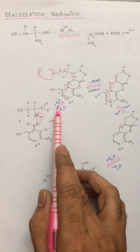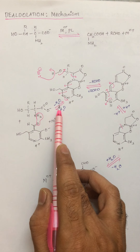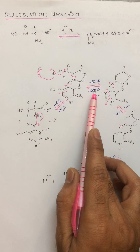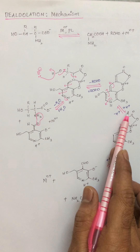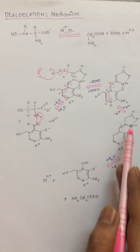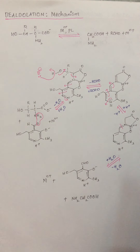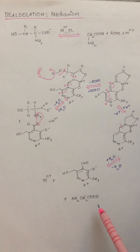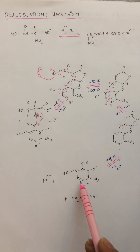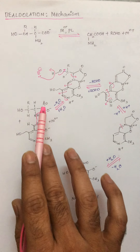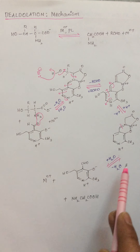We can see the steps involved: the first one is a removal of a water molecule, where it generates a Schiff base. In the second step it is a removal of an aldehyde. The third and fourth steps are just similar to that of transamination and decarboxylation, where an addition of H+ and an addition of a water molecule leads to formation of the product, and pyridoxal is regenerated.